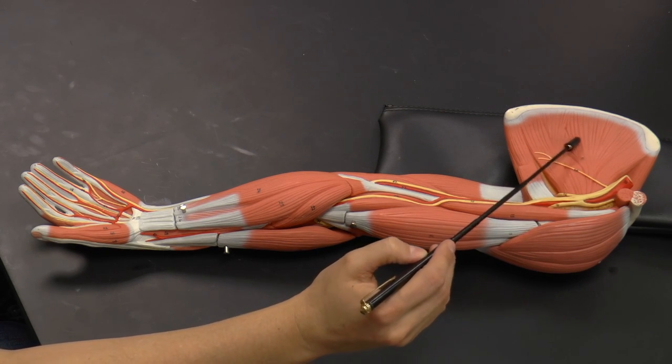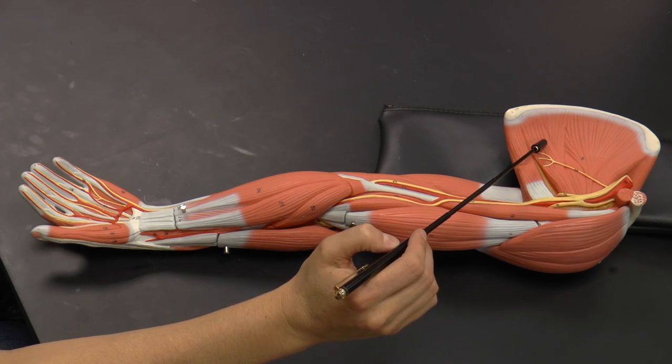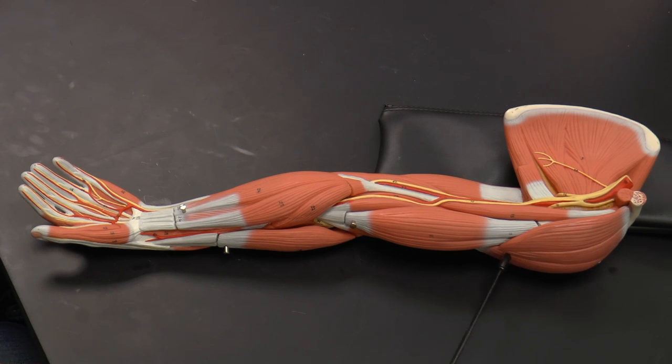The first muscle we're going to look at is the subscapularis muscle in the subscapular fossa of the scapula. Here you can see the deltoid muscle forming the cap of the shoulder, and again we're in an anterior view.